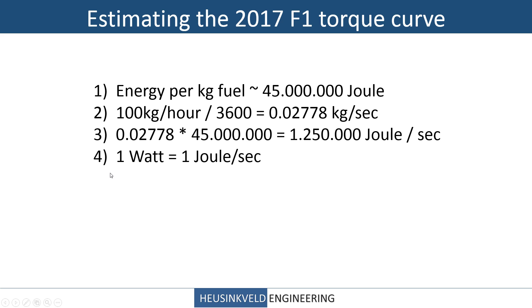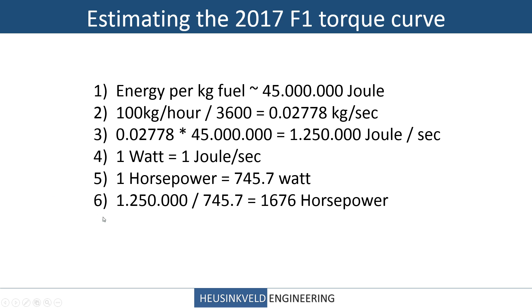Joule per second is just another way of describing one watt of power, and one horsepower is 746 watts. So that gives us the ability to do a little bit of simple math — dividing the 1.25 million by 746, giving us a theoretical horsepower figure of 1,676. Which is a lot. I guess we're done with this video a lot sooner than I thought — 1,676 horsepower, thank you for watching. Or stick around and we'll get into a bit more detail, because this is nonsense.